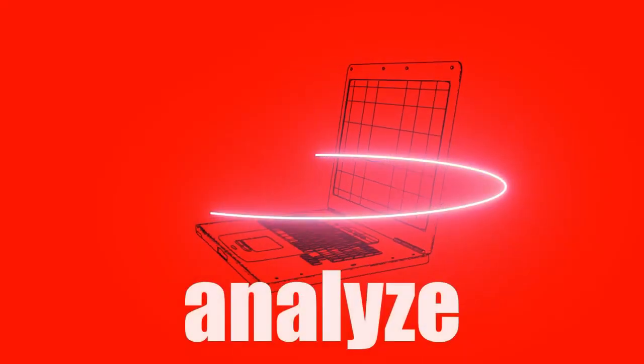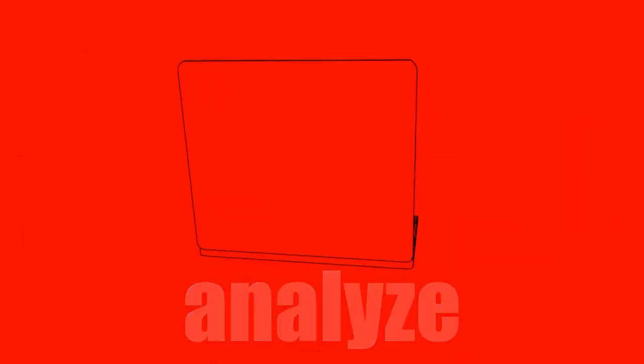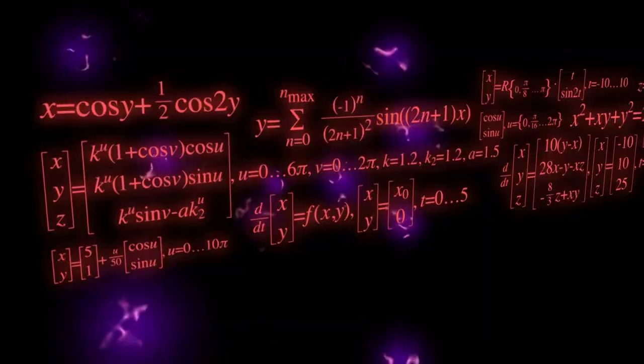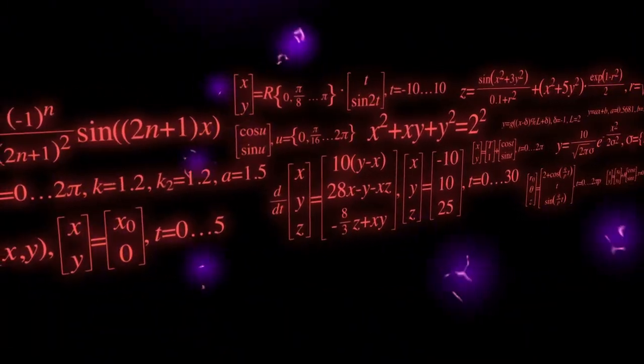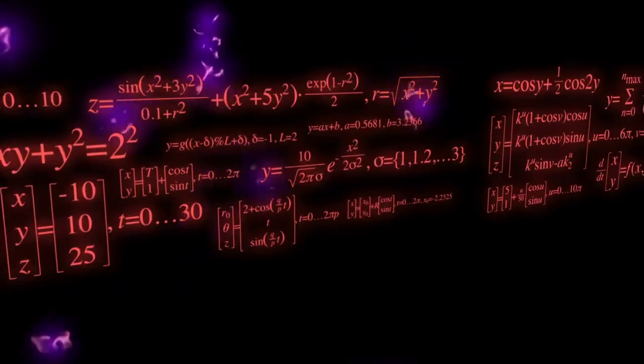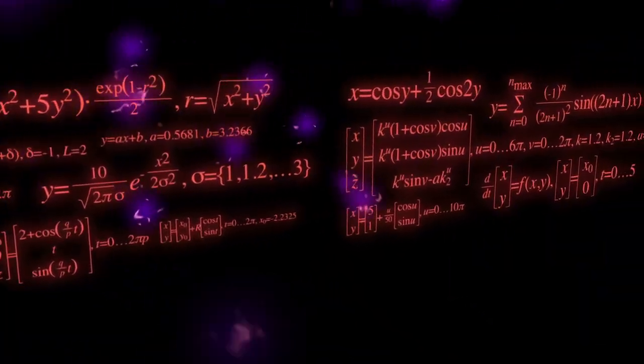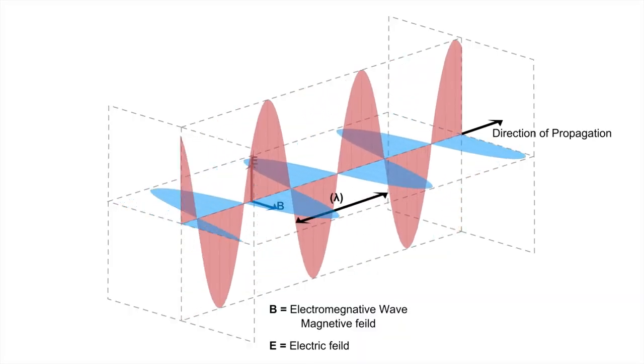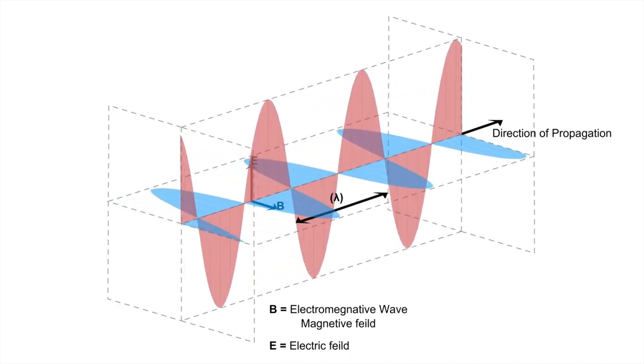Another possibility is that Betelgeuse recently expelled a large amount of mass in a violent outburst, which could have cleared away dust or caused new interactions with its light. In 2019, the star went through an unexplained dimming, possibly caused by a dust cloud blocking part of its surface. This brightening might be a rebound from that earlier event, where new material is now being illuminated.